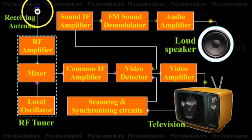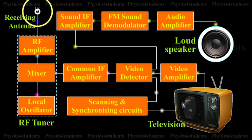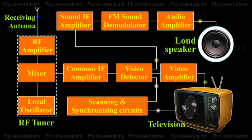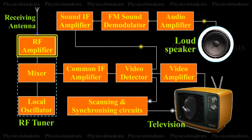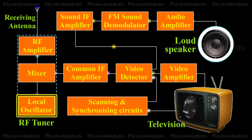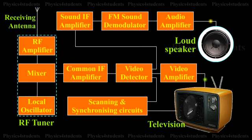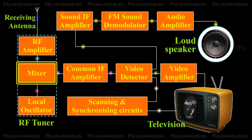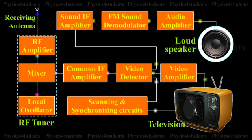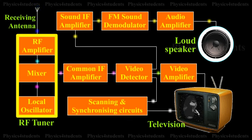The receiving antenna intercepts radiated RF signals and the tuner selects the desired channel frequency band. The antenna provides RF picture and sound signals for the RF amplifier stage. The RF amplifier stage is then coupled into the mixer stage. The mixer is connected to the local oscillator. The RF audio and video signals are heterodyned into intermediate frequency by the mixer and local oscillator. The RF amplifier, mixer, and local oscillator stages are collectively called the RF tuner.